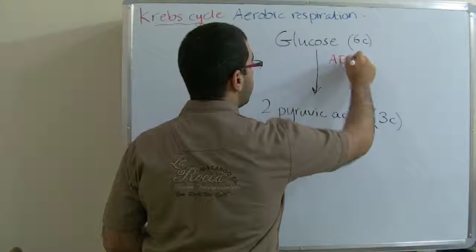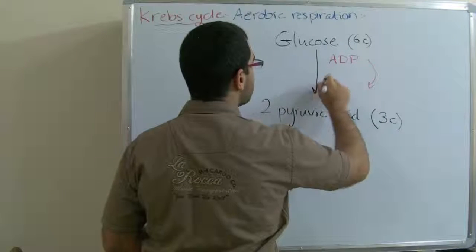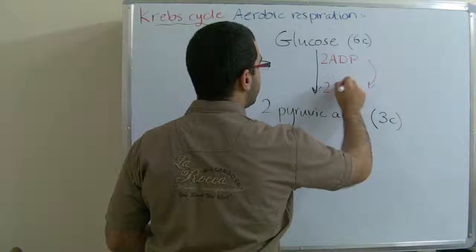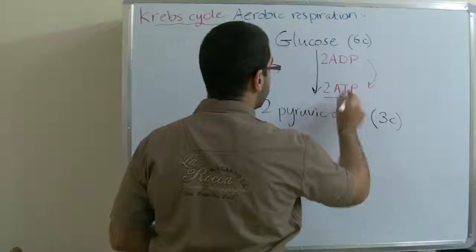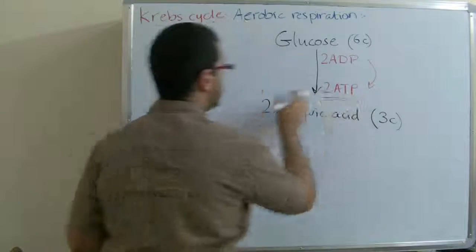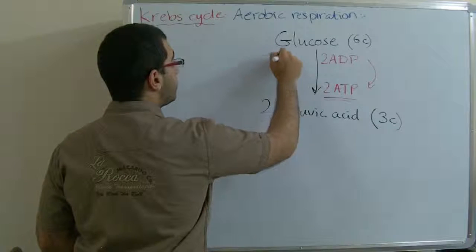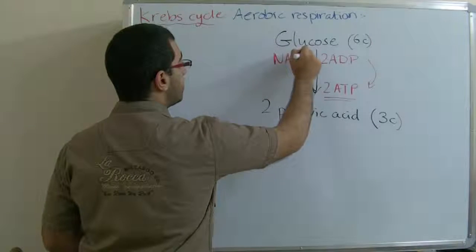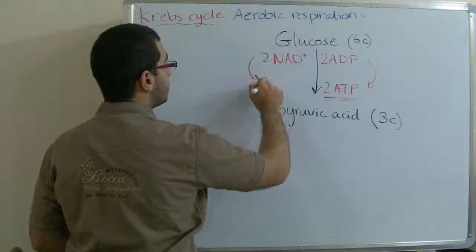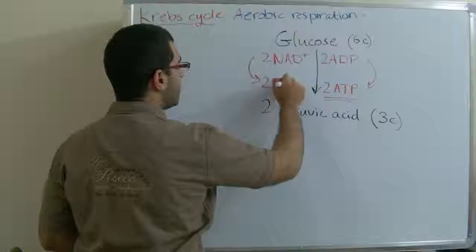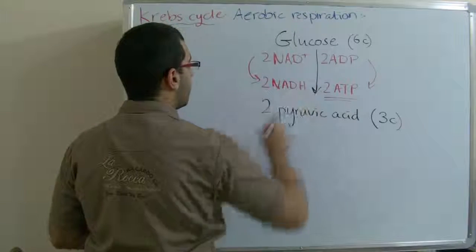During the process of glycolysis we have two ADP molecules oxidizing to two ATP molecules, producing energy with a value of two ATP, and we have two NAD+ reduced into two NADH.